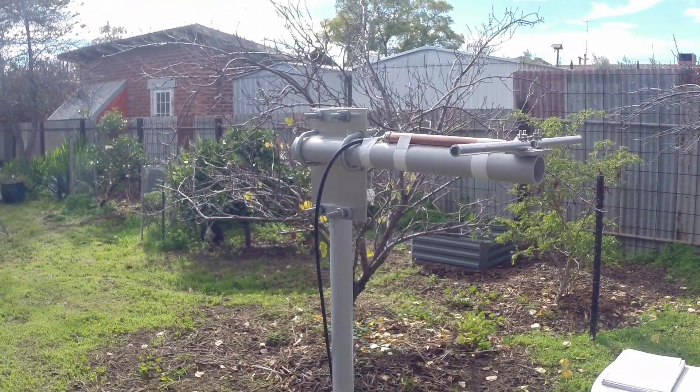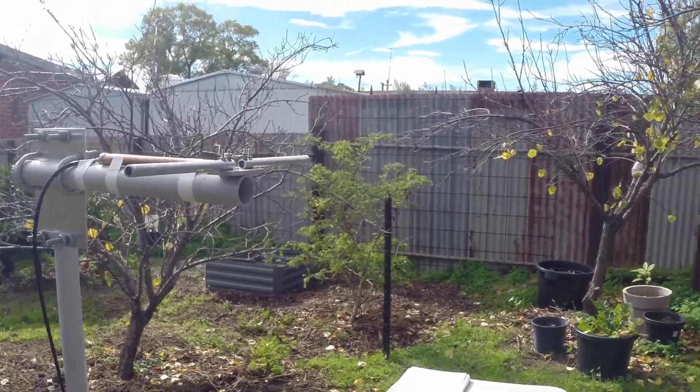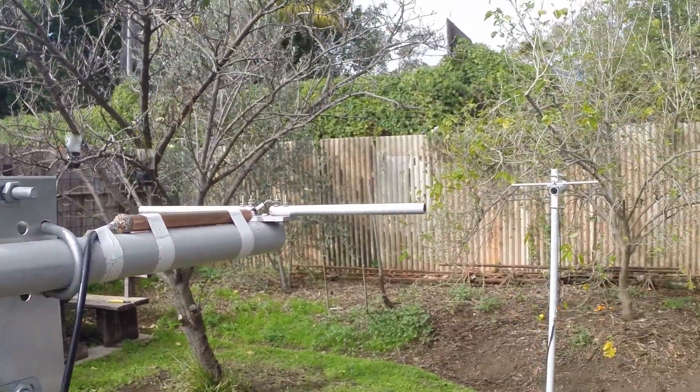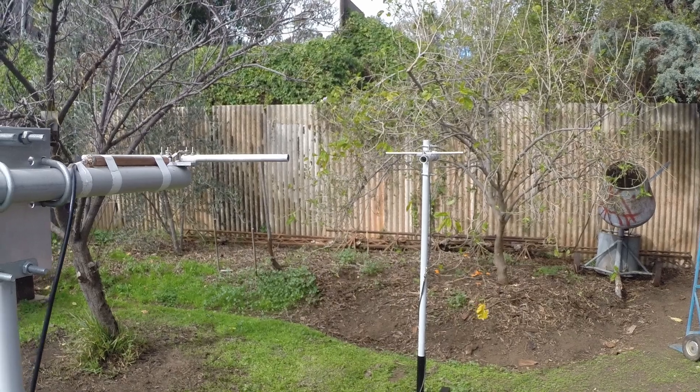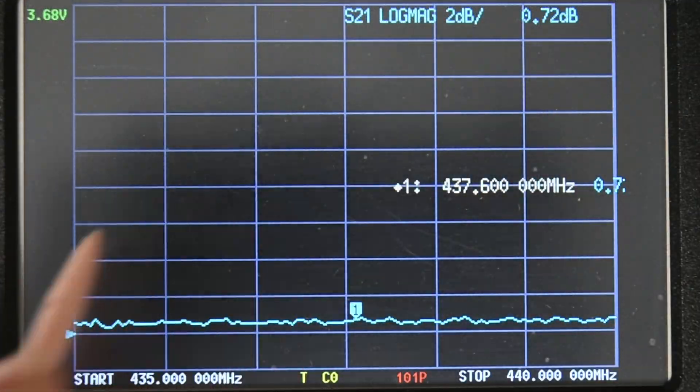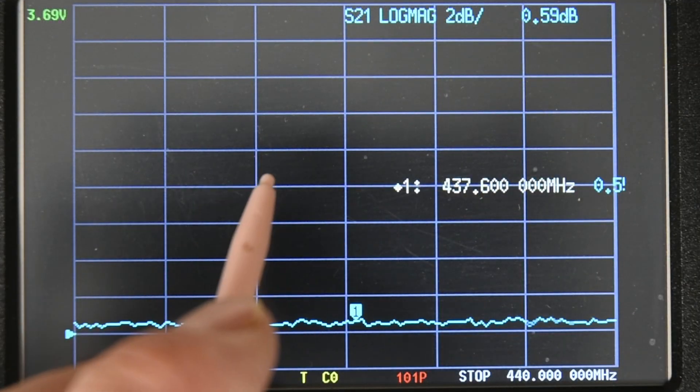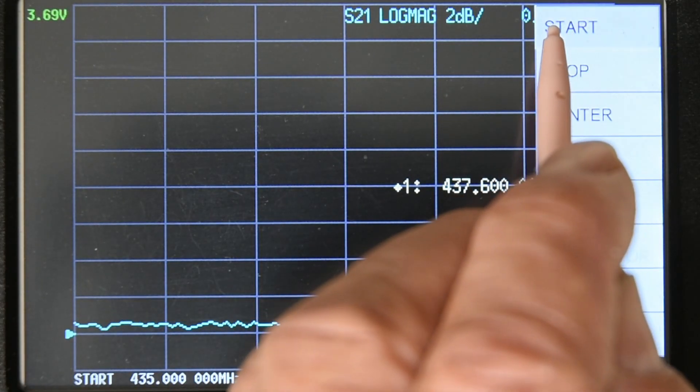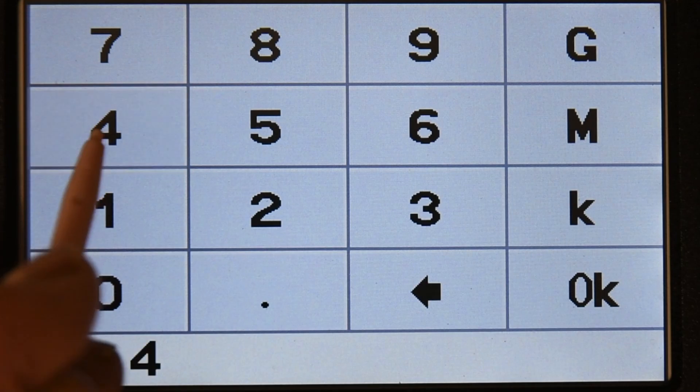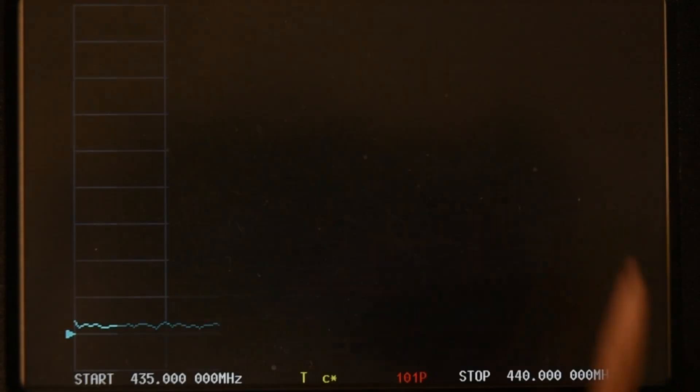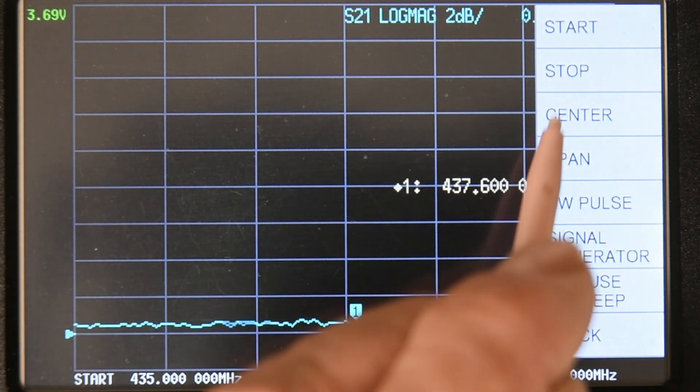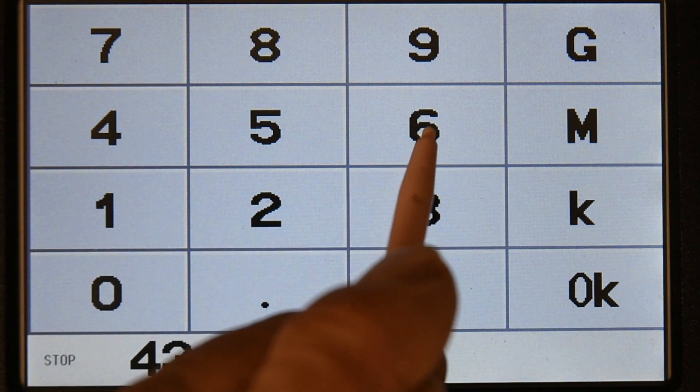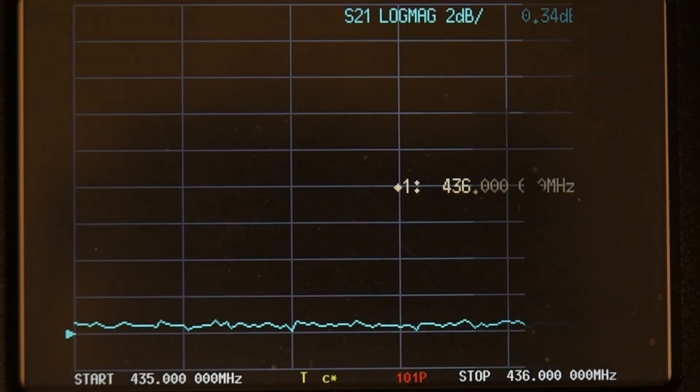Okay we've got the source dipole and the reference dipole set up to set the baseline. We're in the log mag display. Set the frequency range to start at 435 megahertz, stop 436 megahertz.